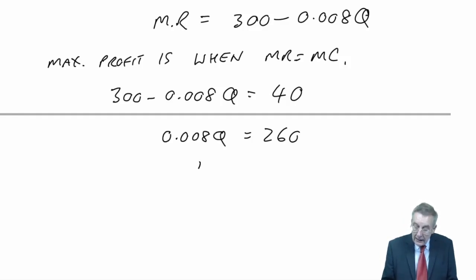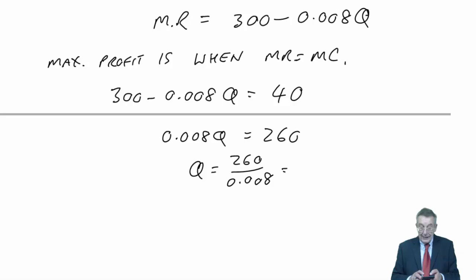0.008Q. Q is therefore 260 over 0.008, which is 32,500.